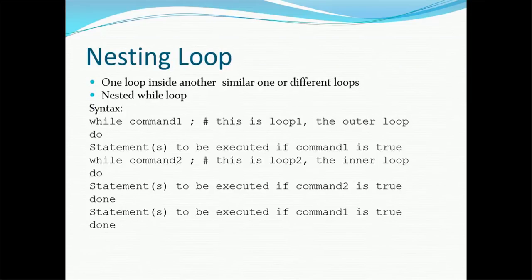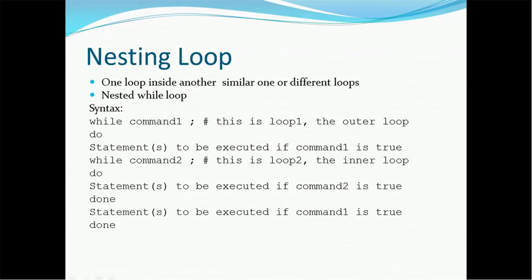Next is nesting loops — a loop within a loop. You can nest one type of loop inside another, such as for within while, or while within until. Each kind of loop can be nested within another. The syntax example shows: while condition one, do — while condition two, do — statement — done — done. You need two 'done' keywords because you are running two loops.